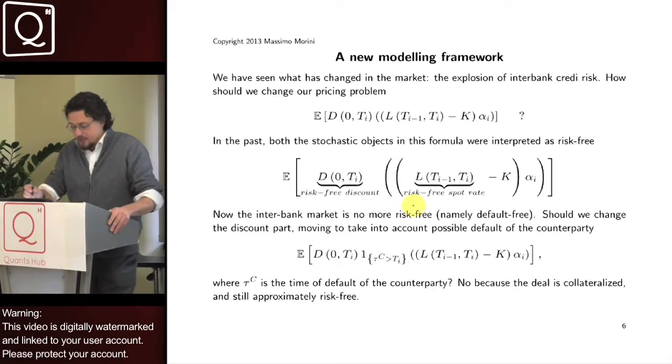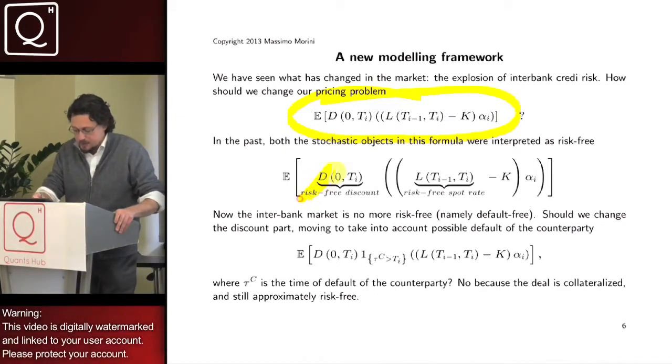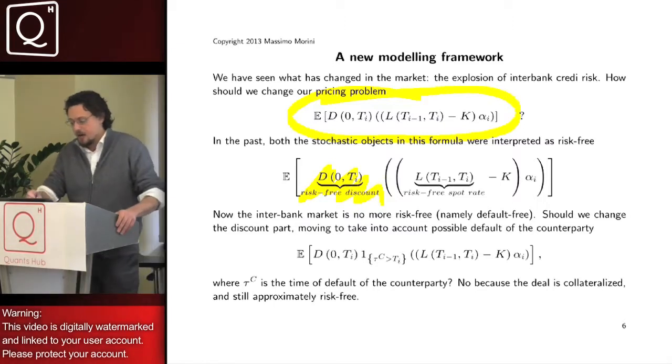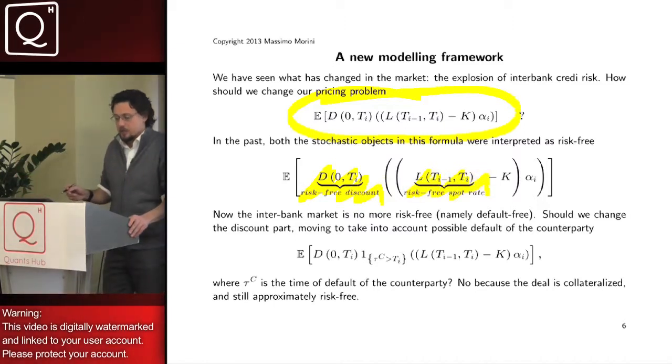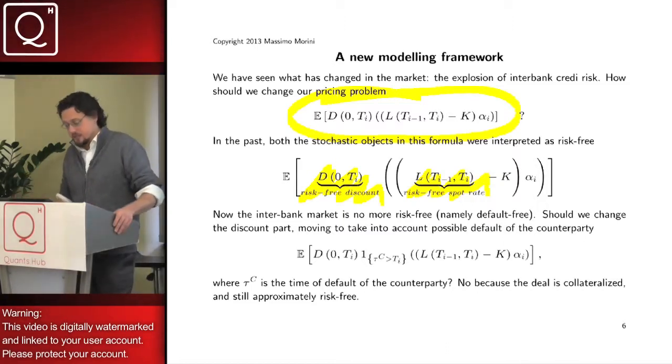You know, formally we still have to price this payoff. In the past, we interpreted our discounting as risk-free discounting and our underlying as a risk-free future spot rate. Now we have understood that there is credit risk in the market.